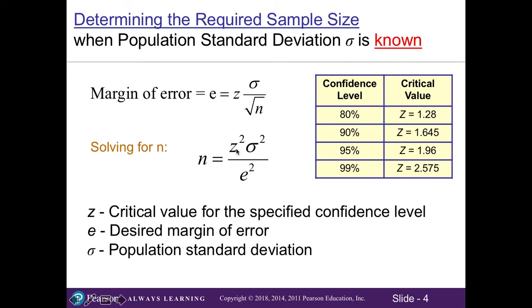Our Z value will depend on the confidence level we want, as shown in our commonly used confidence levels table. Our population standard deviation is plugged into the formula, along with our margin of error E. Each of these values are squared: we take Z squared times our population standard deviation squared, divided by our margin of error squared.